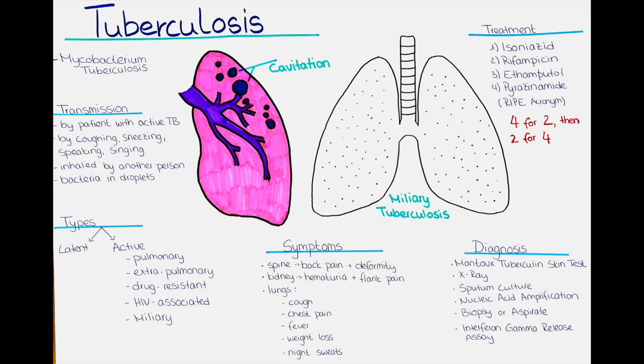According to the WHO, 10 million people get infected annually and 1.4 million people die of tuberculosis annually. Around 5% of tuberculosis cases occur in industrialized countries. Another contemporary challenge concerning tuberculosis is the development of drug-resistant TB strains.